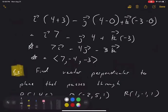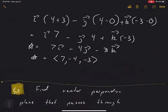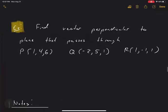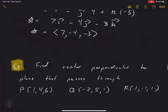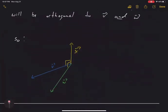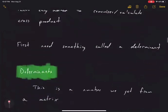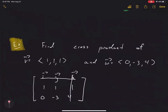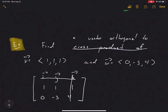To recap: the cross product of V and W gives a vector that is orthogonal (perpendicular) to both V and W. That's why the problem was phrased as 'find a vector orthogonal to V and W' — taking the cross product gives us exactly that.